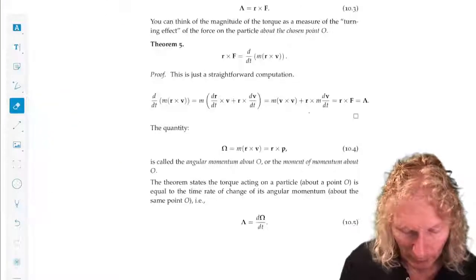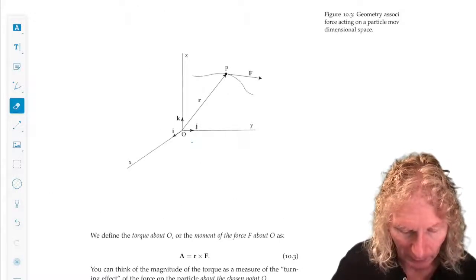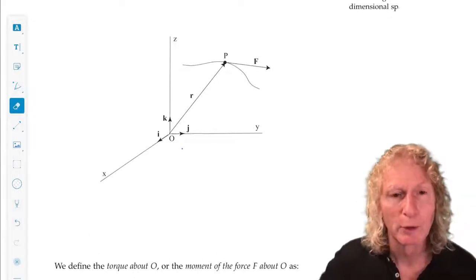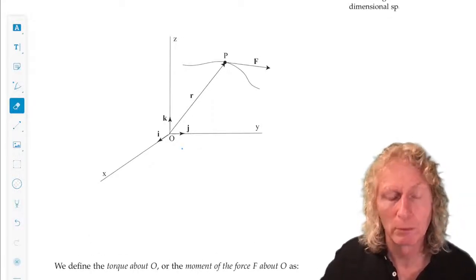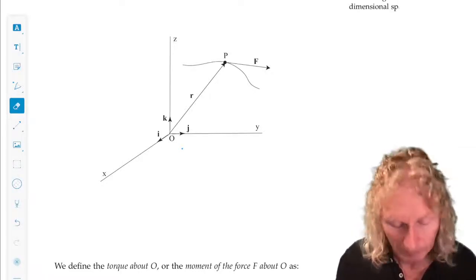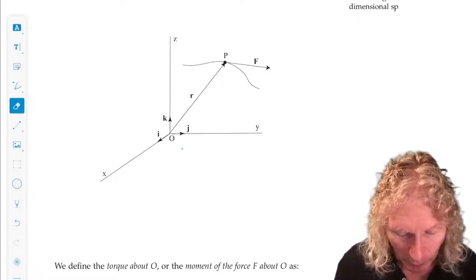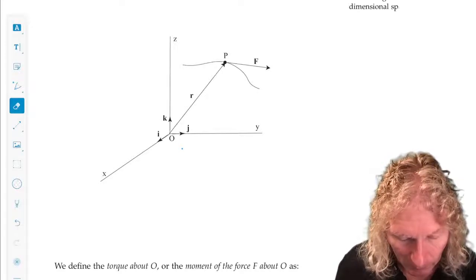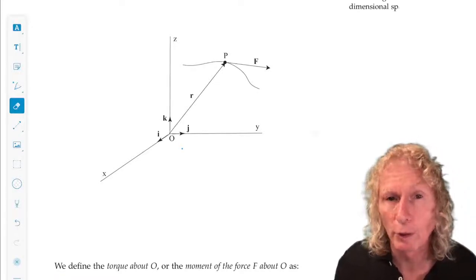So the setup for these ideas is we're in three dimensions. We have our usual three-dimensional coordinate system, I, J, K, X, Y, Z, and we have a particle of constant mass M.